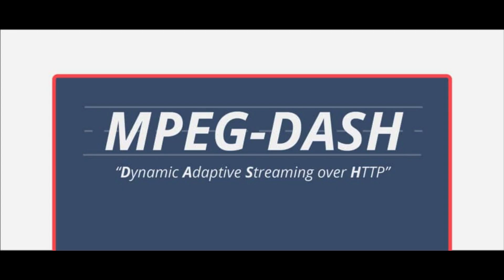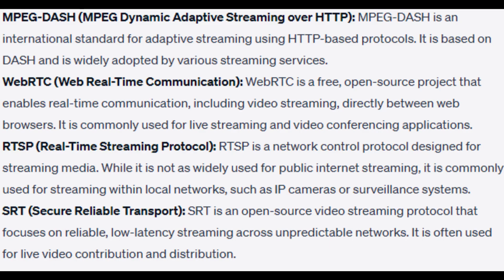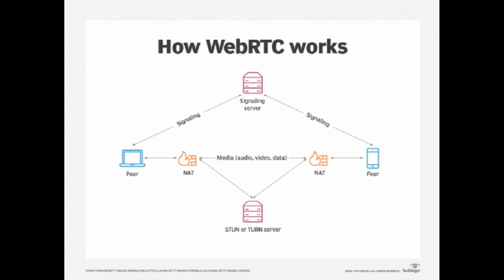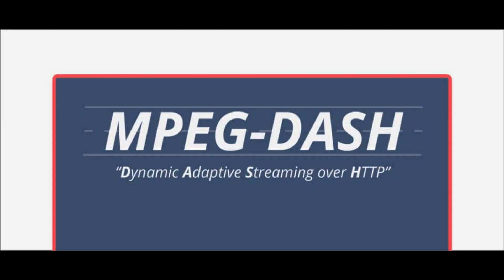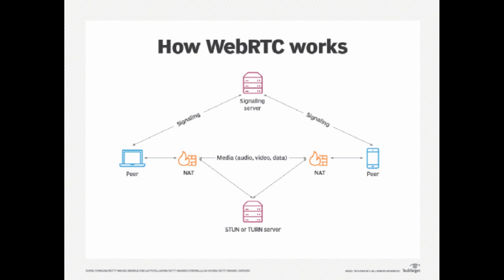DASH. Dynamic Adaptive Streaming over HTTP, DASH, is an adaptive streaming protocol developed by the MPEG group. It uses standard HTTP servers and is compatible with a wide range of devices and platforms. DASH allows content to be dynamically adapted based on the user's network conditions.